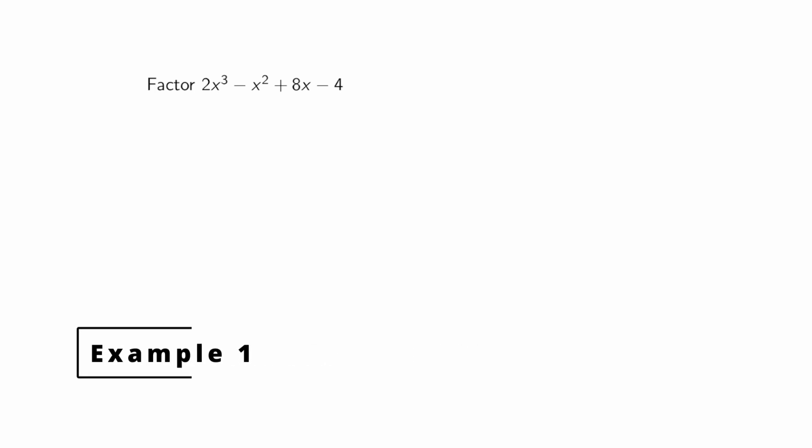Let's begin with an example. The first step of factoring any polynomial is to factor out the greatest common factor, or GCF. But if we look at these four terms, they have no common factors aside from one, so the GCF is one. However, if we look at the first pair of terms — 2x cubed minus x squared — those two terms have a common factor of x squared. The second pair of terms, 8x minus 4, has a greatest common factor of 4.